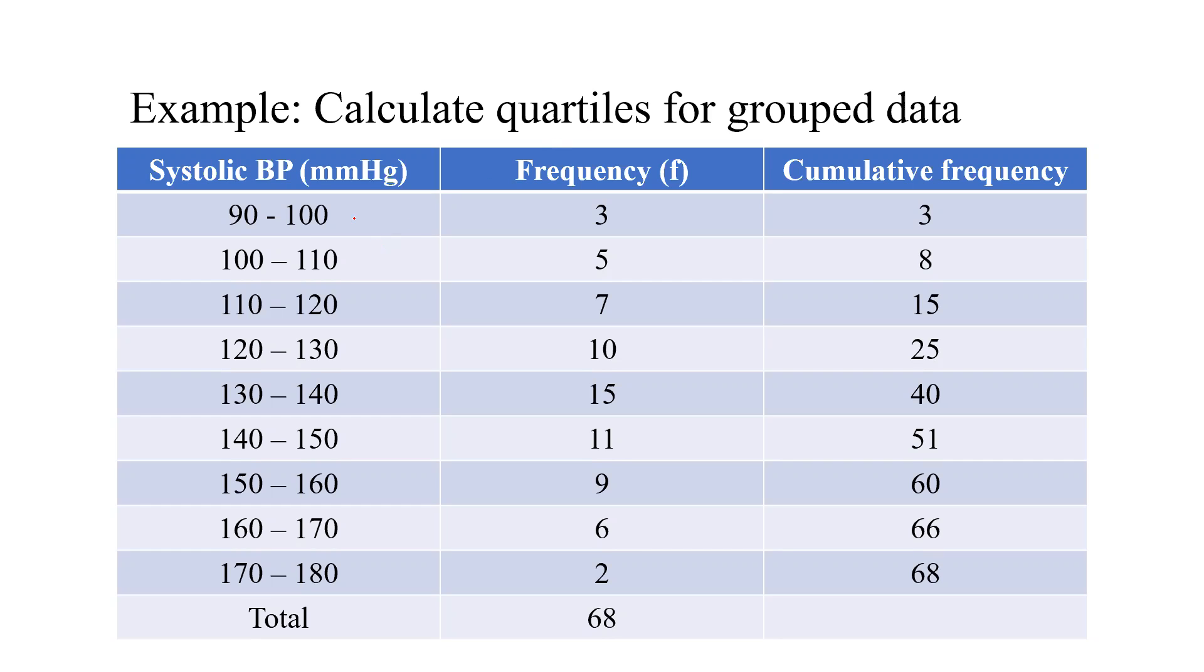So here systolic blood pressure is given in the dataset. 90 to 100, there are 3 patients, then 5, 7, 10, 15, 11, 9, 6, 2, total 68.